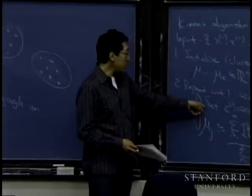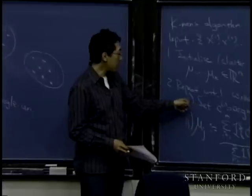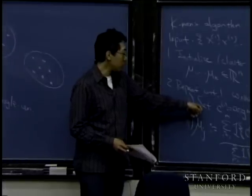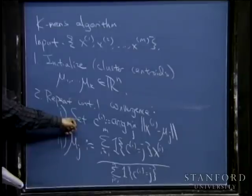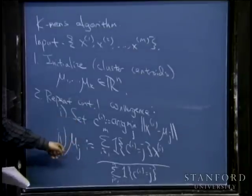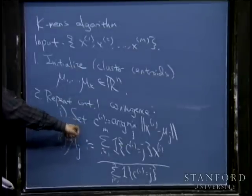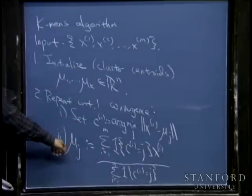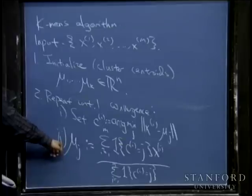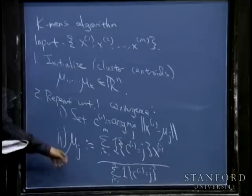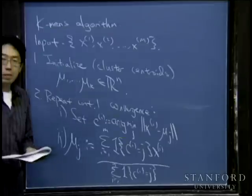To recap the two steps: step 2.1 is assigning points to cluster centroids, and step 2.2 is shifting cluster centroids to be the mean of all points assigned to them.